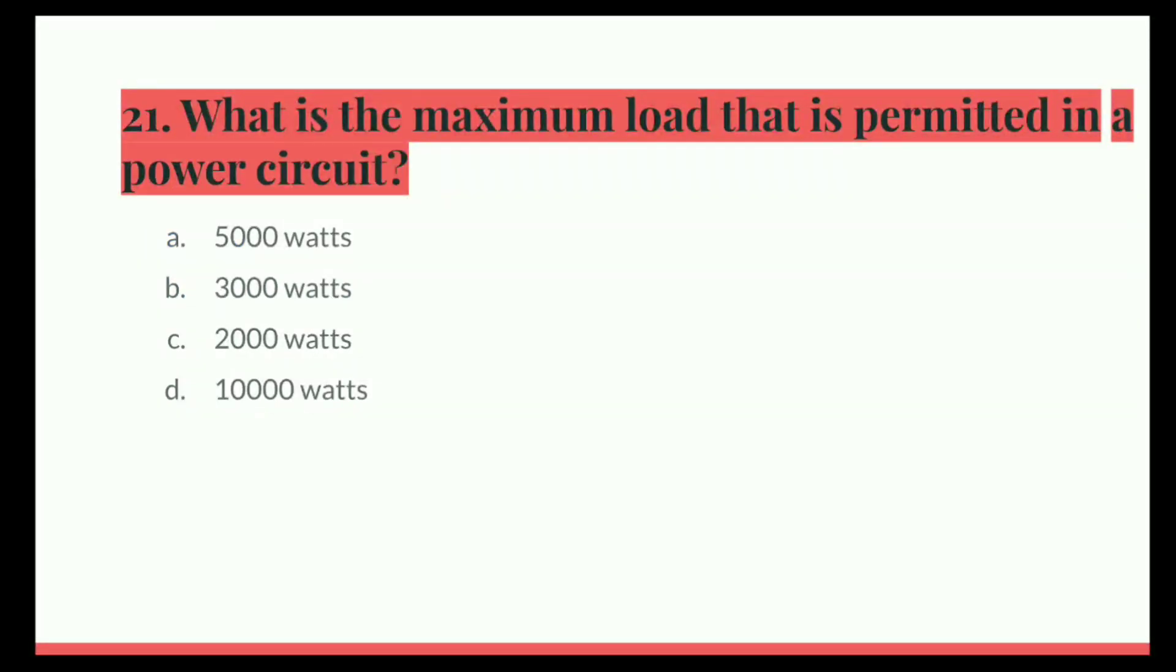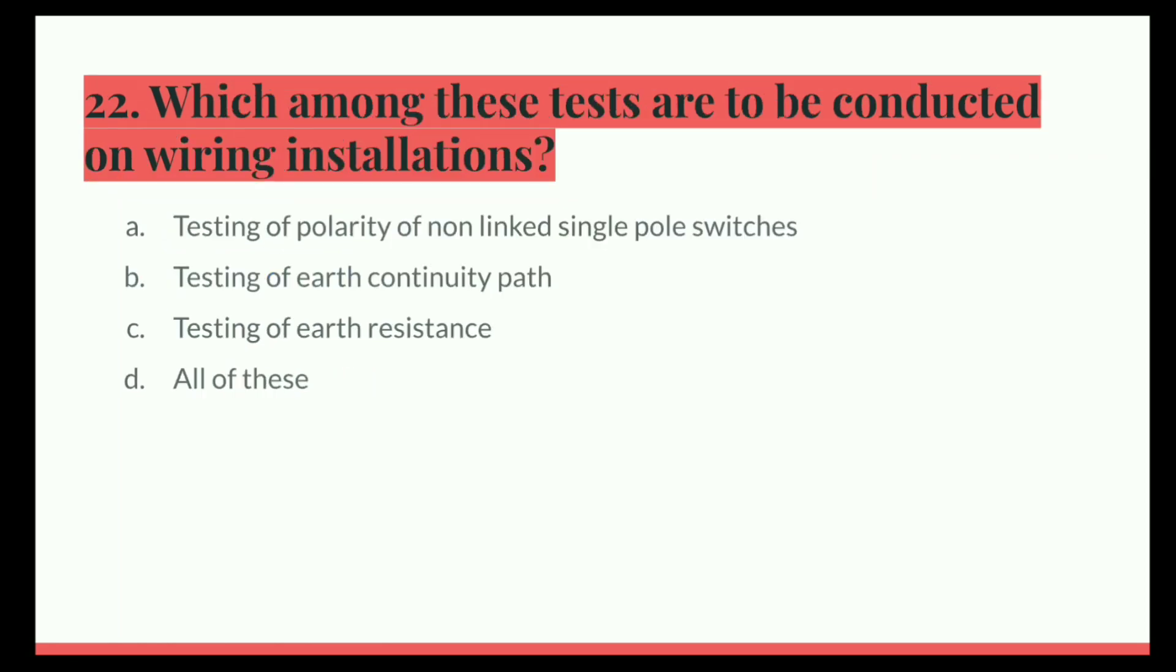Next question. What is the maximum load that is permitted in a power circuit? Option A, 5000 watts. B, 3000 watts. C, 2000 watts. D, 10000 watts. The correct answer is 3000 watts.